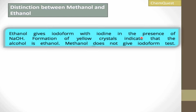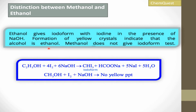Ethanol, when treated with iodine in the presence of NaOH, reacts and forms yellow crystals — this indicates that the alcohol is ethanol. If you get yellow crystals, this means that the alcohol is ethanol. But methanol does not give this test.